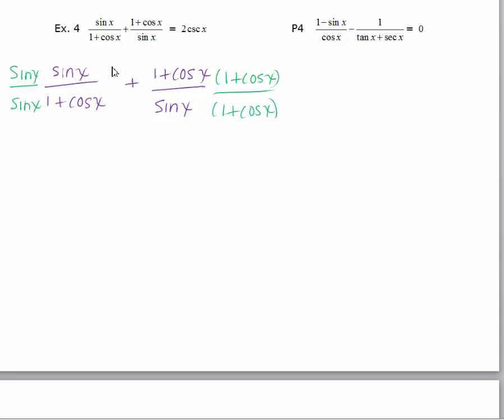I'll distribute the numerators and combine them into 1 and leave the denominators factored. So sine x times sine x gives us the sine x squared. The 1 plus cosine times itself gives us 1 plus 2 cosine x plus cosine squared x.